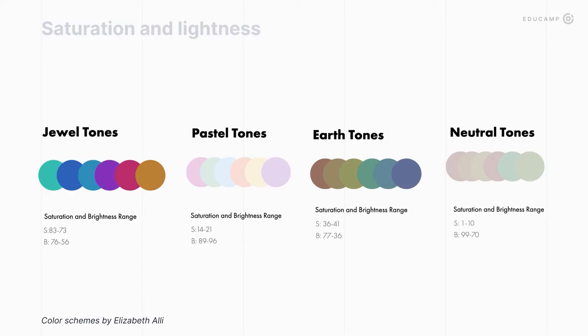Look at these palettes, for example. The colors there work together. If I show you a new color, you could probably tell which palette it should belong to — all because unconsciously, your brain distinguishes different saturation and lightness.